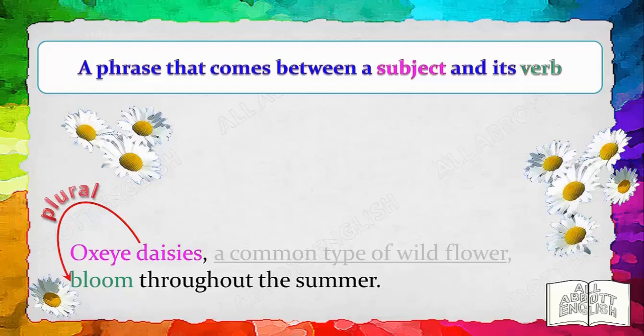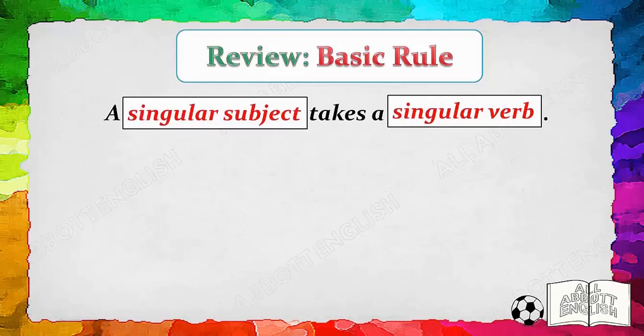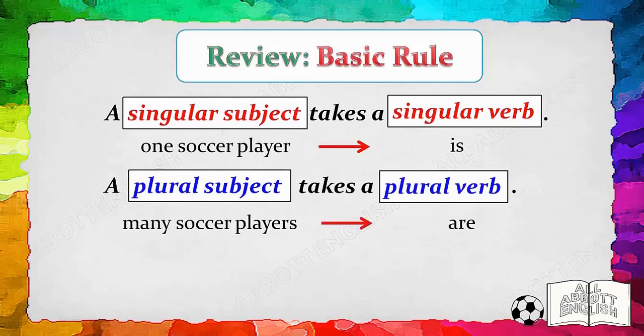In determining whether the subject agrees with the verb, don't be confused by the words that come between them. It is important to know the basic rules of subject-verb agreement. In written and spoken English, an error in subject-verb agreement is very noticeable, as it is a very basic grammatical error. Basically, in a sentence, a verb must agree with a subject in number: a singular subject takes a singular verb — 'one football player is' — and a plural subject takes a plural verb — 'many football players are.'